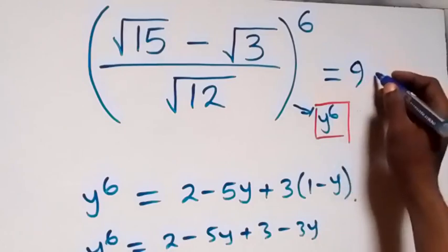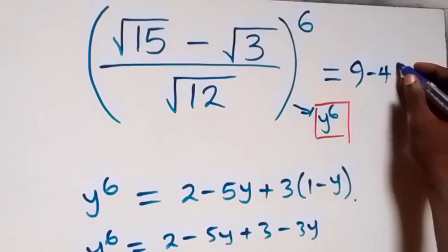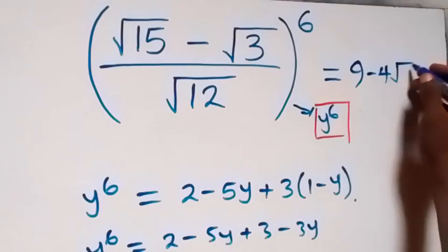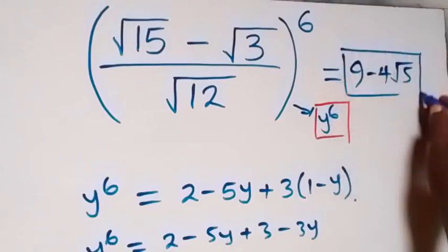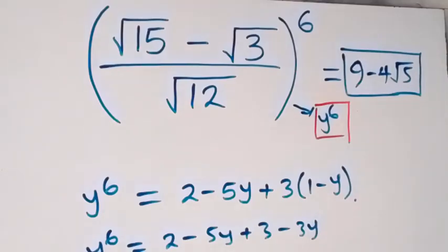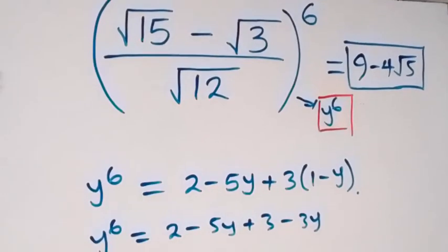So the simplified form is 9 minus 4√5. Thank you for watching. Subscribe to my channel and turn on the notification bell. If you have another way of solving this, put it in the comment section and share this video. See you next class, bye for now.